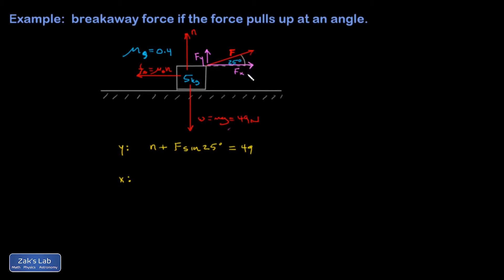In my x analysis, I have pulling to the right F of x, that's F cosine 25. And with any breakaway type of question, we're assuming the static friction force is maxed out. I should have written a little sub max on this because it's only equal to mu s times N if it's maxed out.